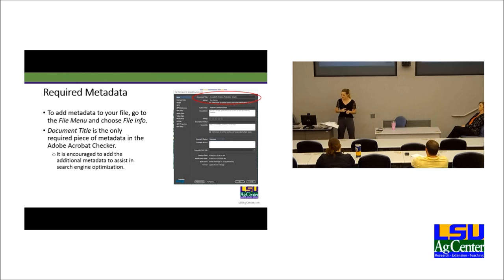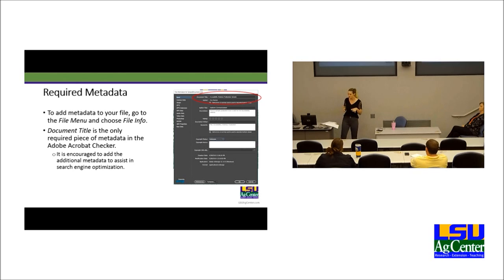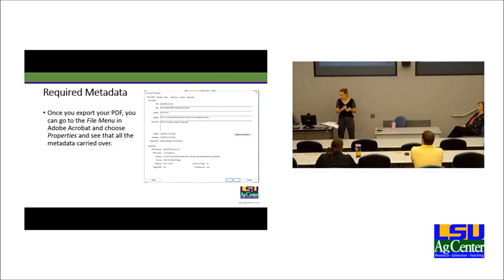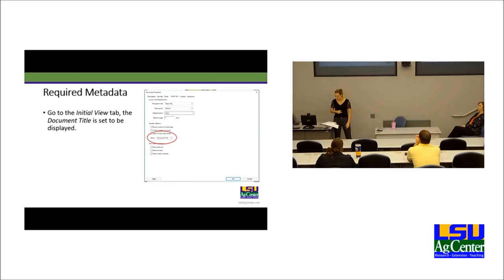Required metadata: there's some required metadata you need to add to an accessible PDF for it to pass Acrobat Accessibility Checker. To add metadata, go to the File menu and choose File Info. Inside the file information dialog box, the document title field is the only required piece of metadata, but I encourage you to add additional metadata to assist in search engine optimization — including author, description, keywords, and a copyright notice if necessary. Once you export your PDF, you can go to File > Properties in Adobe Acrobat and see that all your metadata carried over. Under the Initial View tab, the document title is set to be displayed.